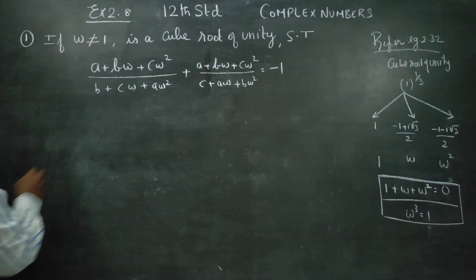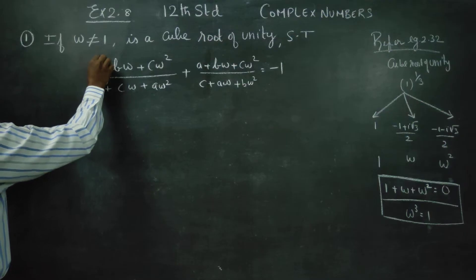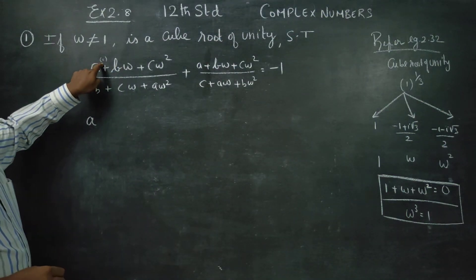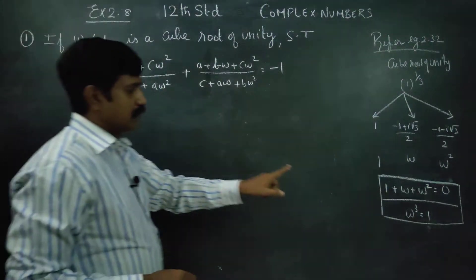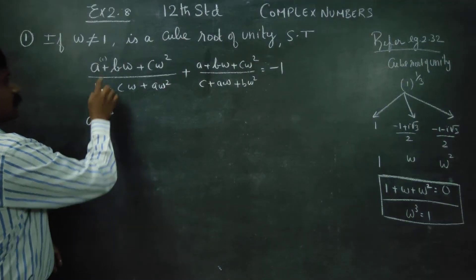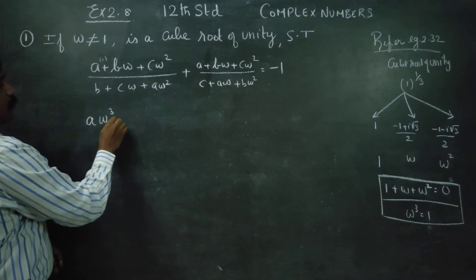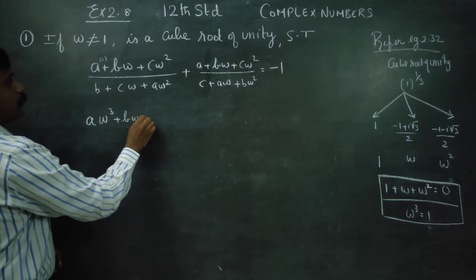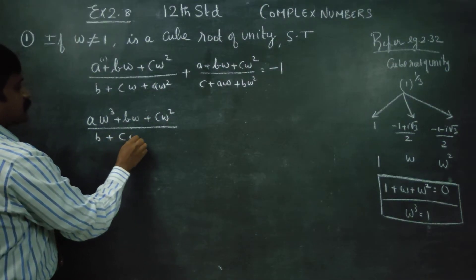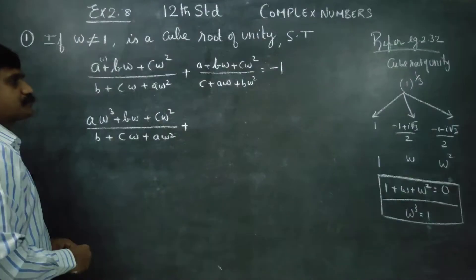In Step 1, I am going to multiply A into 1, using ω³ = 1. The expression becomes: A·ω³ · (B·ω + C·ω²) all divided by (B + C·ω + A·ω²). This is Stage 1.